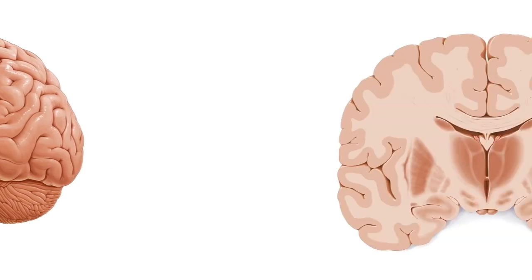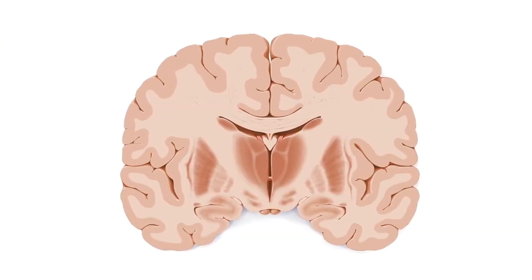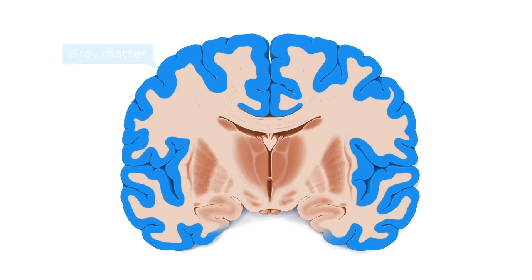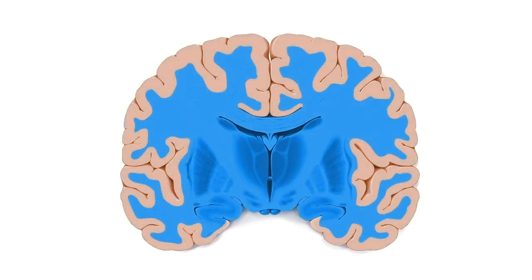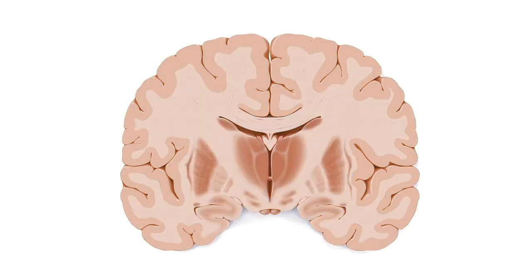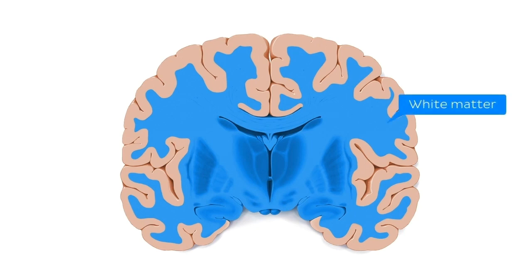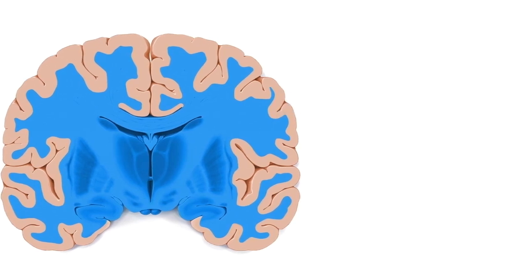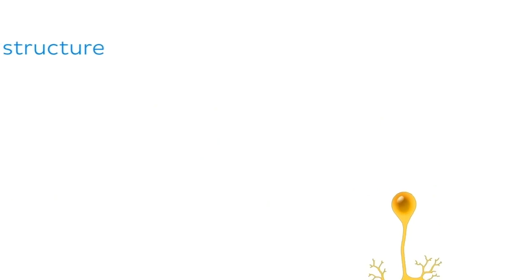If we switch to a coronal view, we can see the internal structure of the brain. Here we can clearly identify two distinct areas. The outer layer appears somewhat darker and is known as the grey matter, whereas much of the deeper tissue is lighter and is therefore known as the white matter. To understand why this is, let's take a quick look at the structure of a neuron.